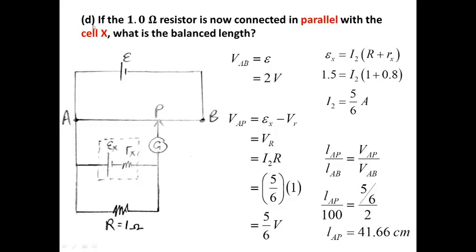Now the last question, D: if the 1-ohm resistor is now connected in parallel with cell X, what is the new balance length? For this case, VAB as usual equals EMF E, which is 2 volts. But now there is a complete circuit at the bottom, so there is current flow at the bottom — current I2 passes through big R and also through the small R.